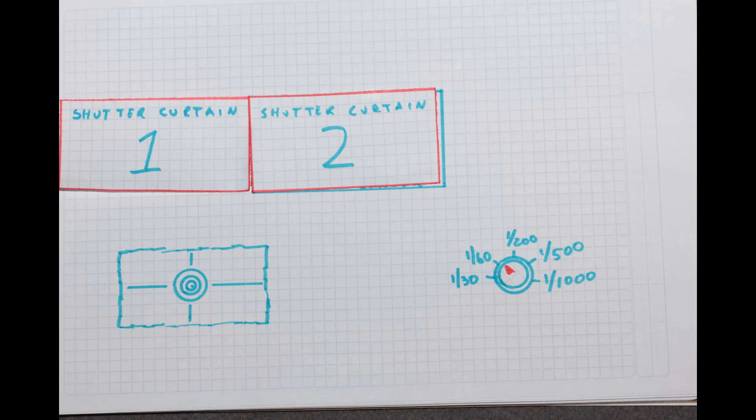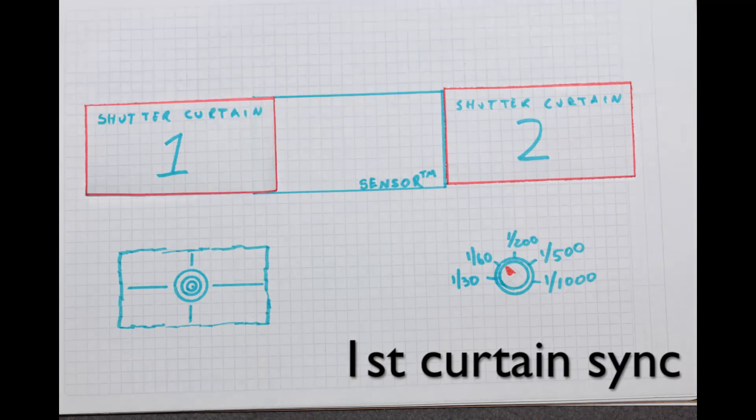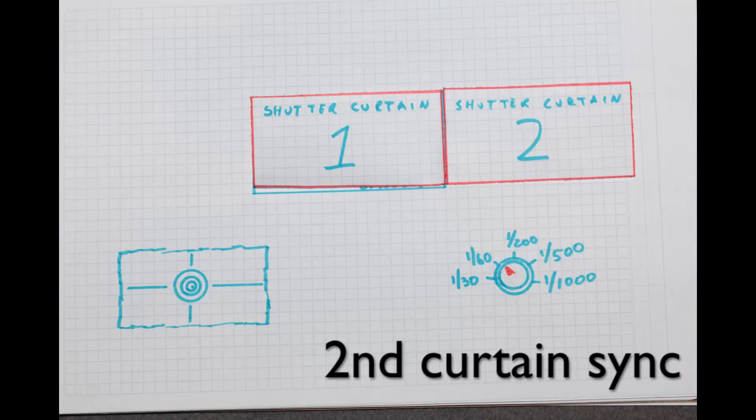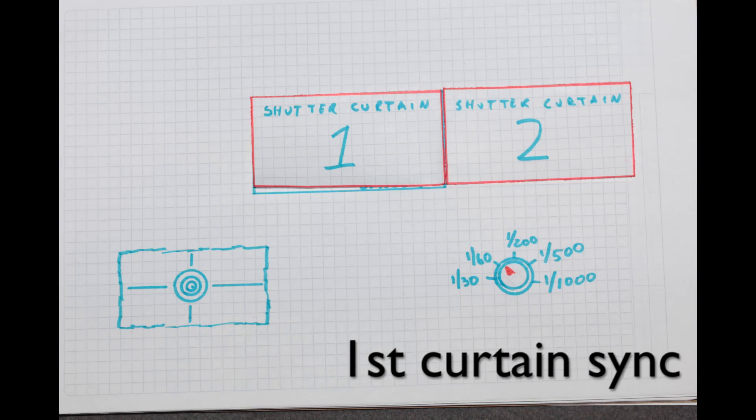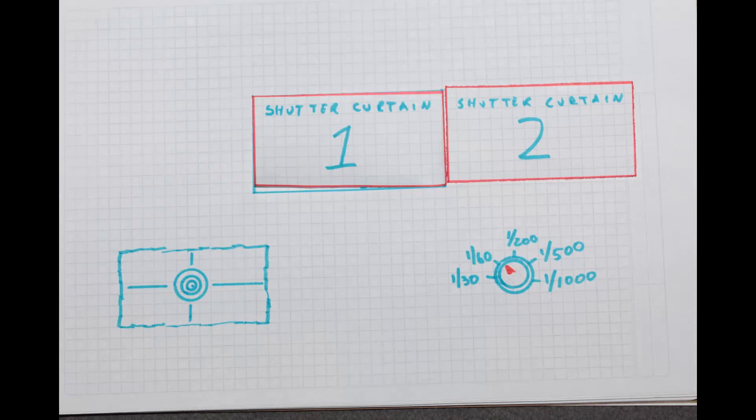As an aside, you may have heard of first curtain or second curtain flash sync. That is basically whether you want the flash to fire when the first shutter first opens, or just before the second shutter closes.